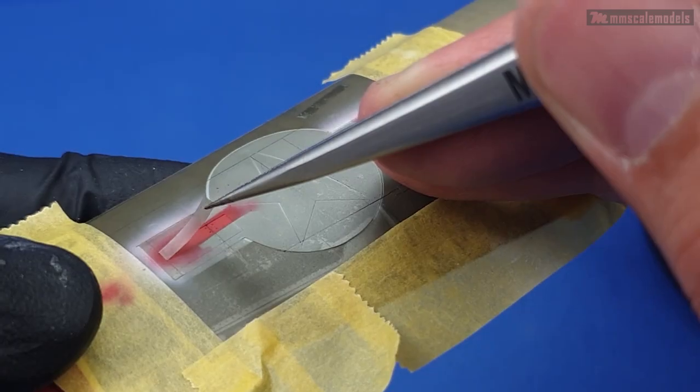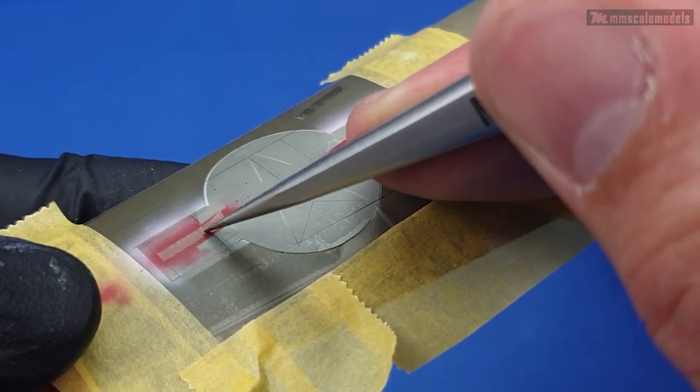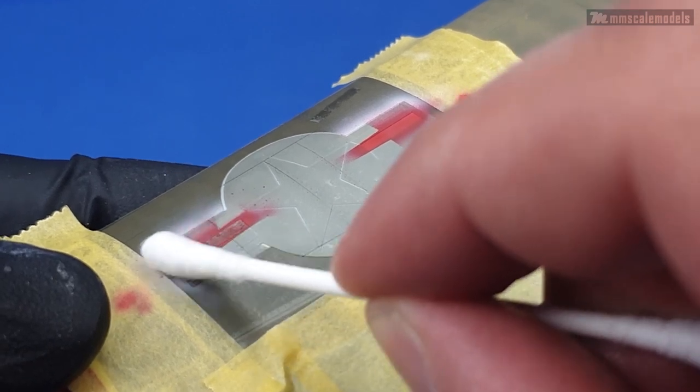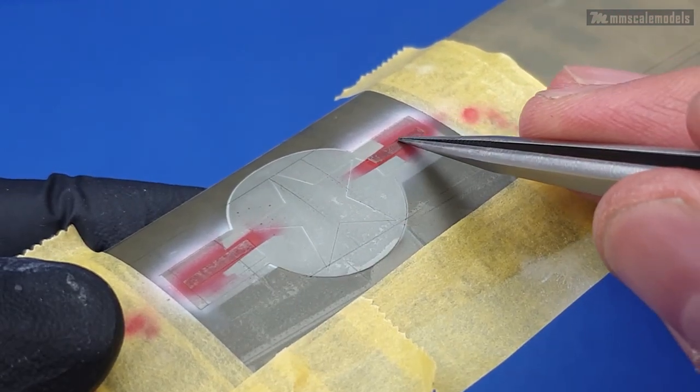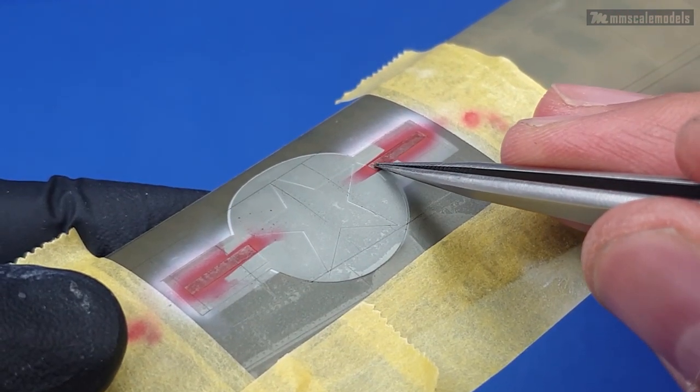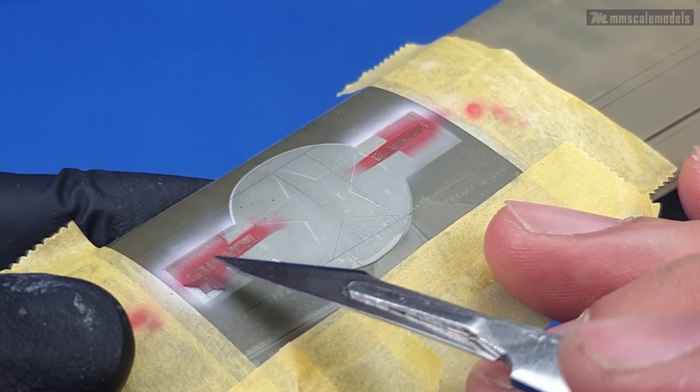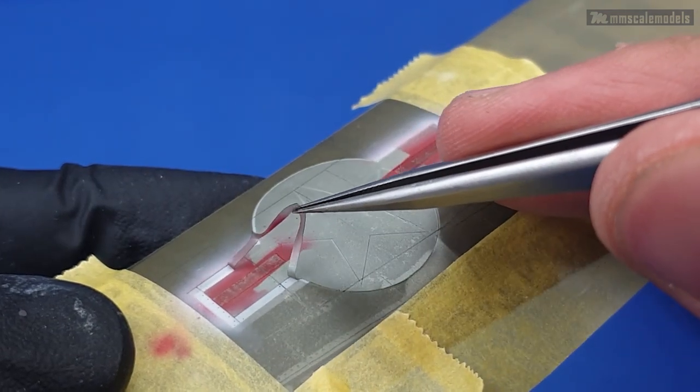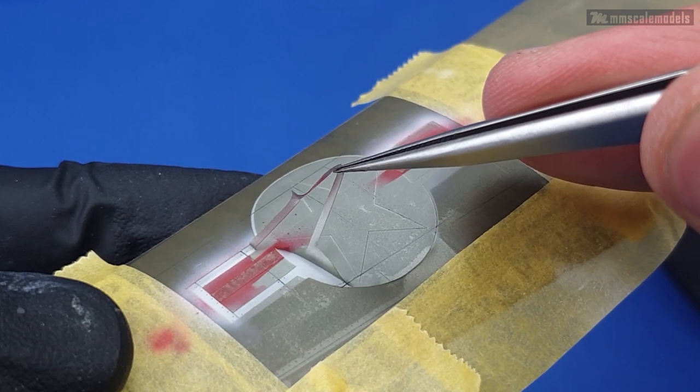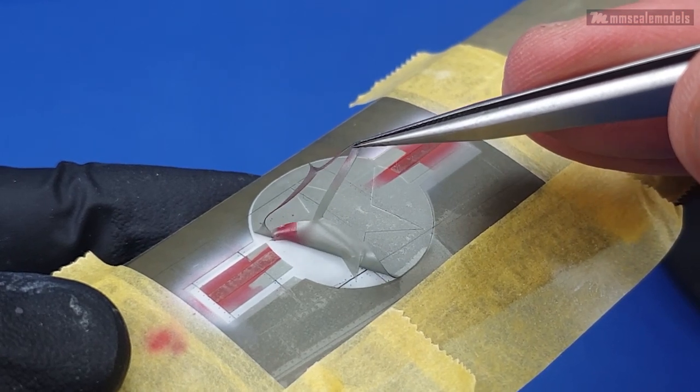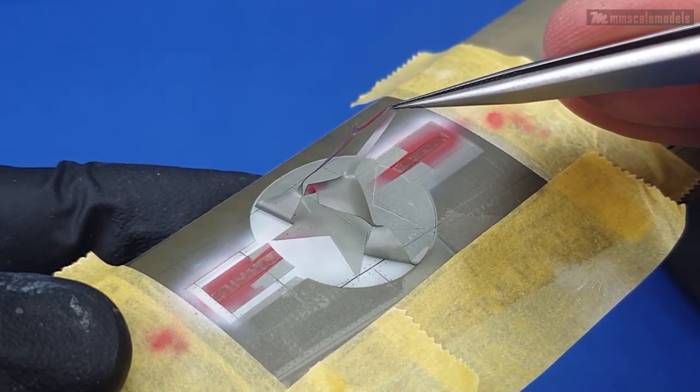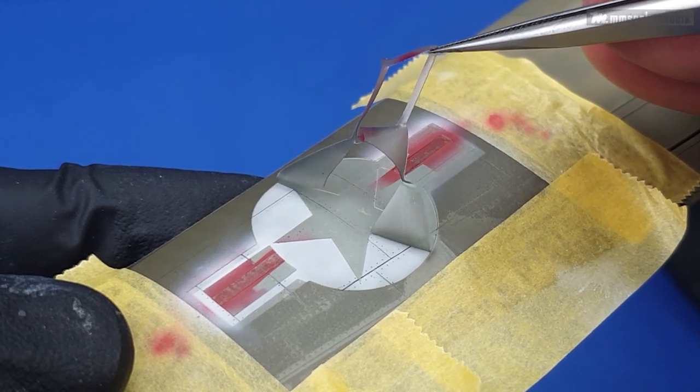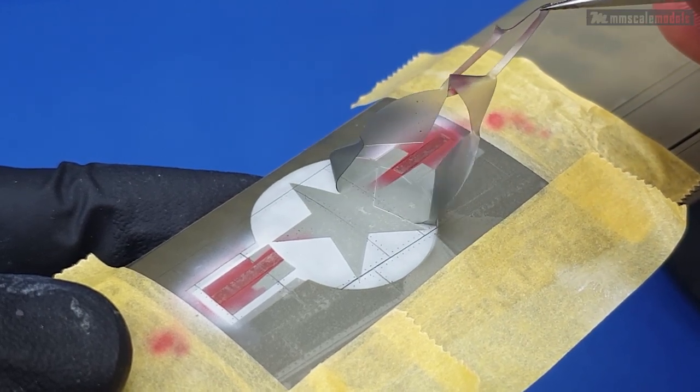Now let's set the stage for the insignia blue. First we'll have to return the masks of the red areas on their places, and now we can remove the mask that covers the blue area. As usual, links to most tools and materials I use can be found in the description of this video.